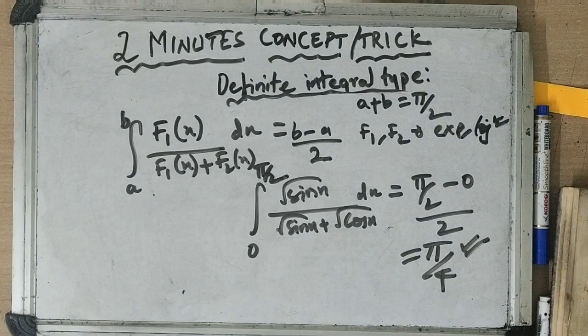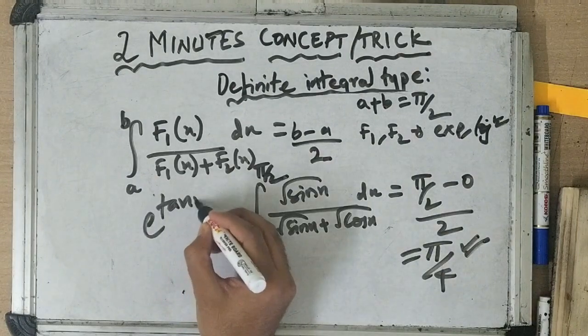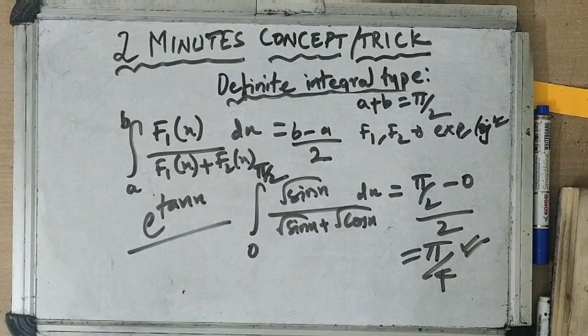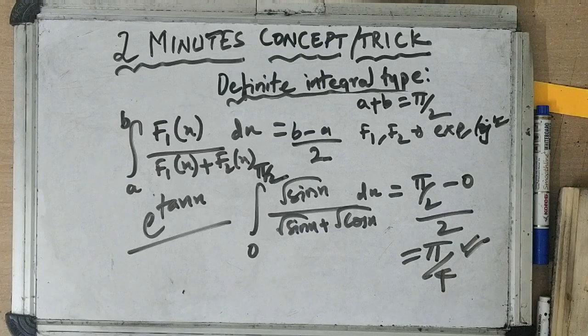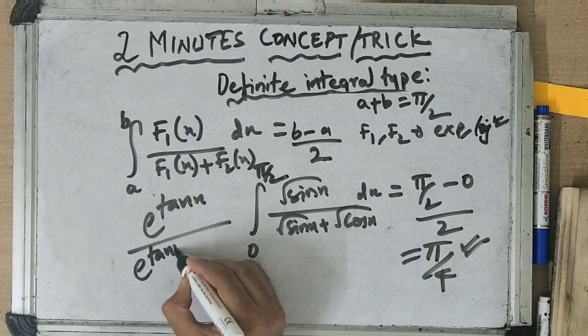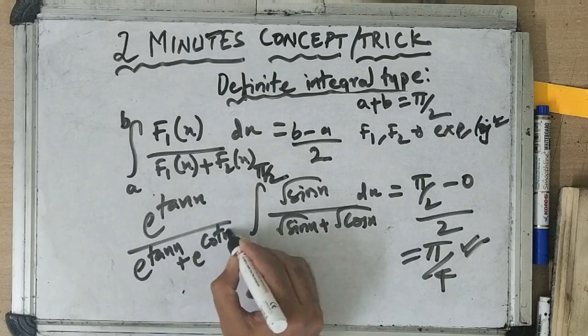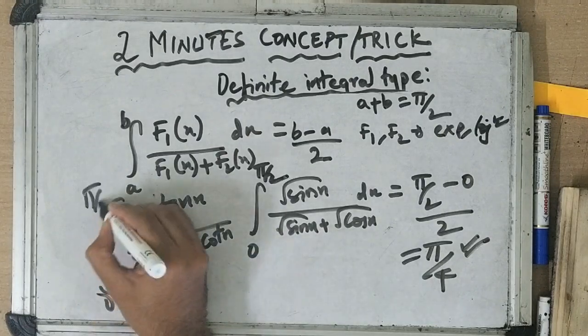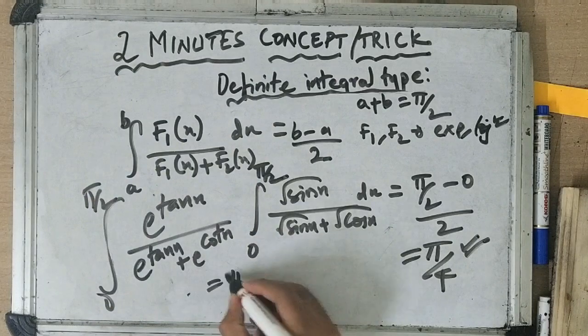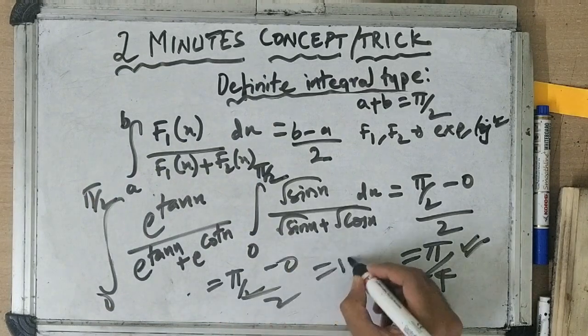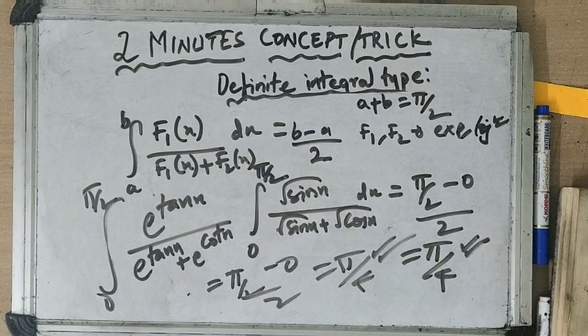So this holds good for anything. If you have e power tan x by e power tan x plus e power cot x with 0 to pi by 2, sum is pi by 2. So the answer is pi by 2 minus 0 by 2, pi by 4.